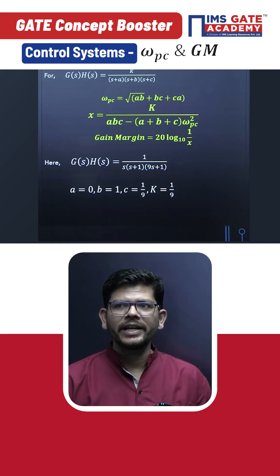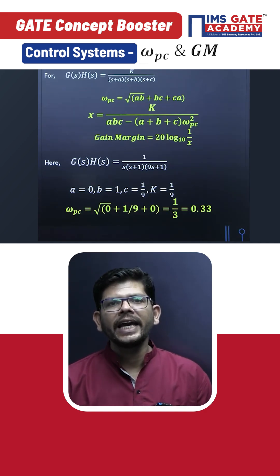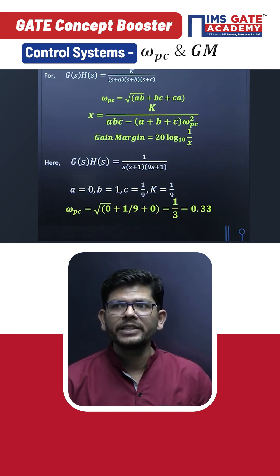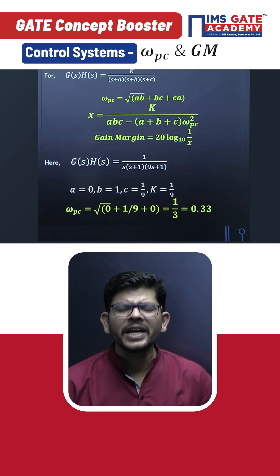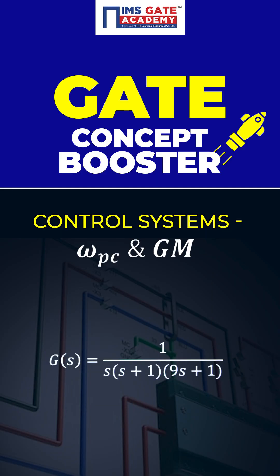Then just put the values in the formula that I've shown you, and easily you'll get the value of omega pc, which is coming to 1 by 3 here. So isn't it a useful trick? Thank you.